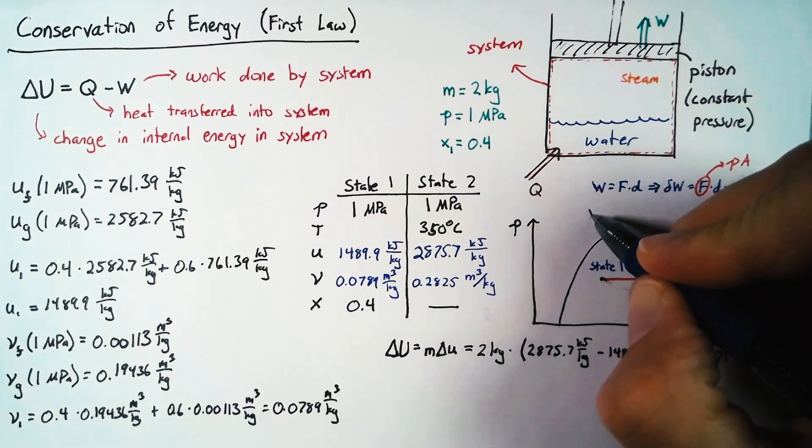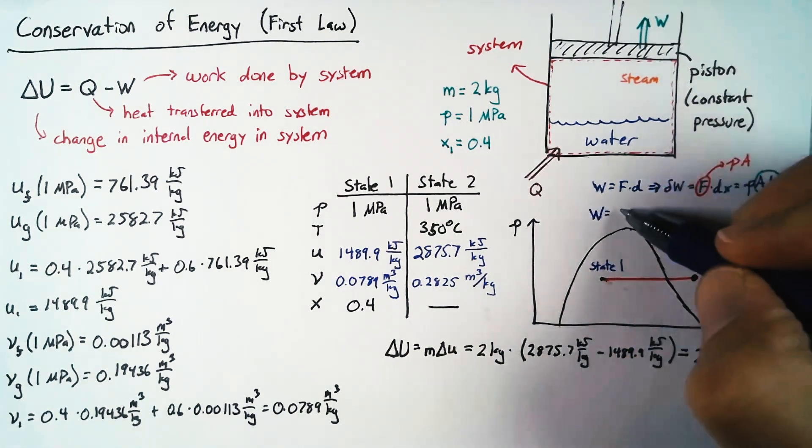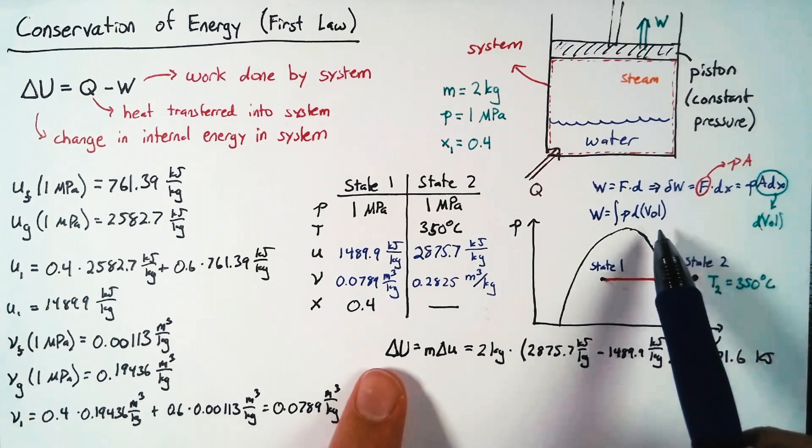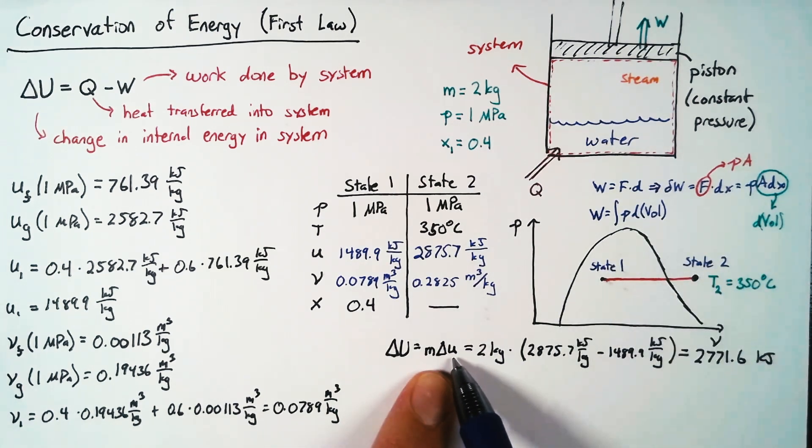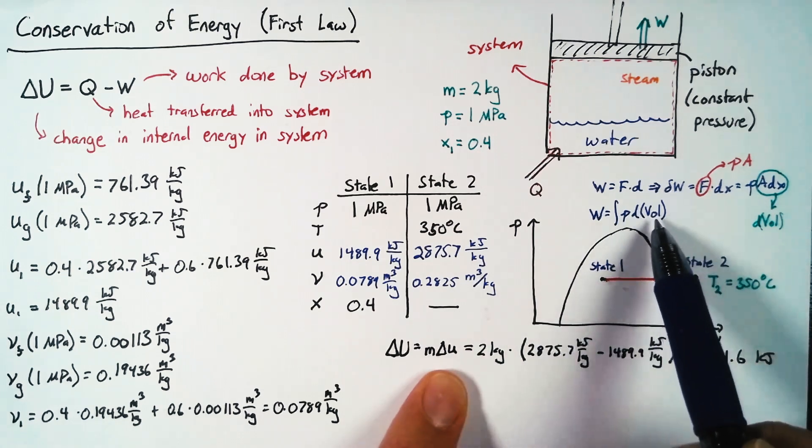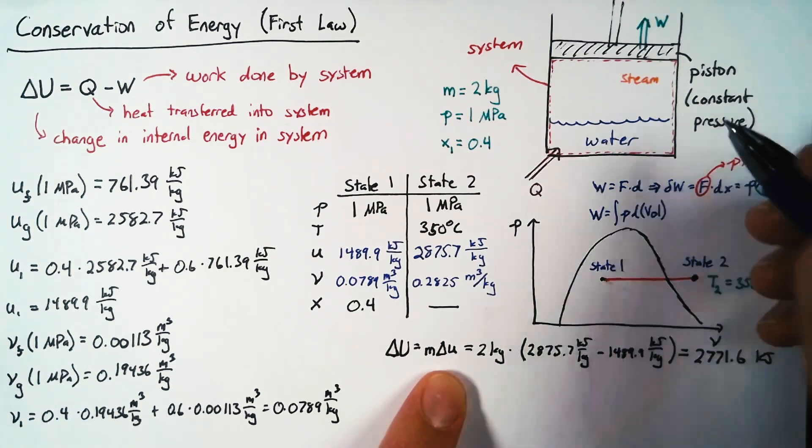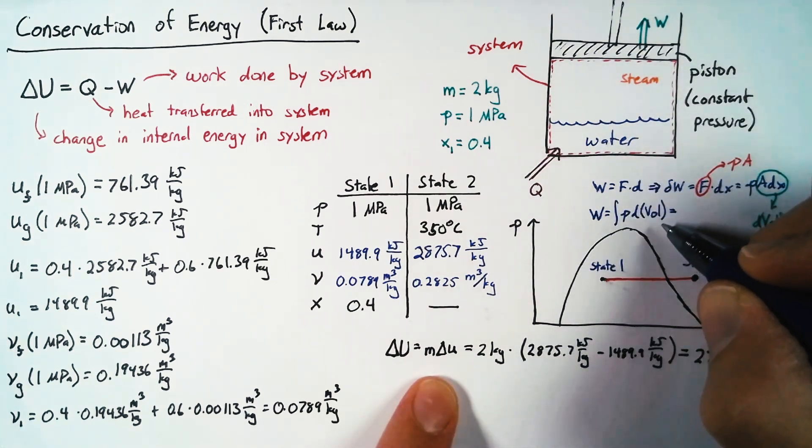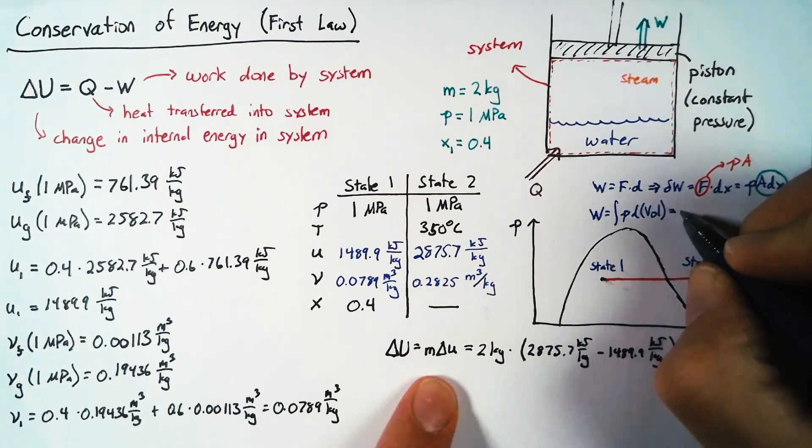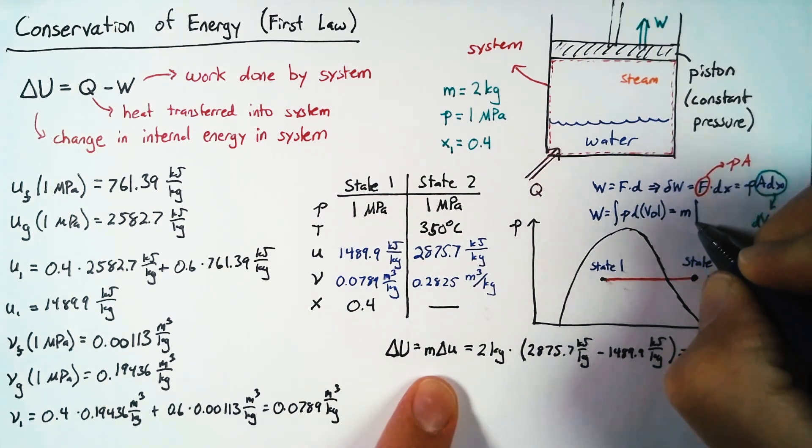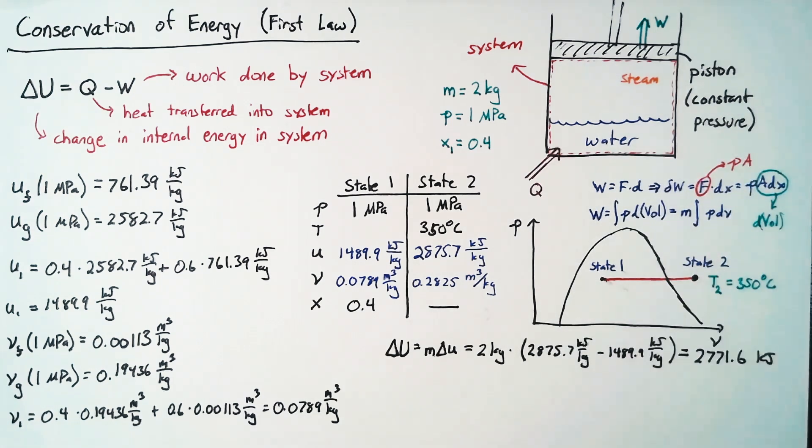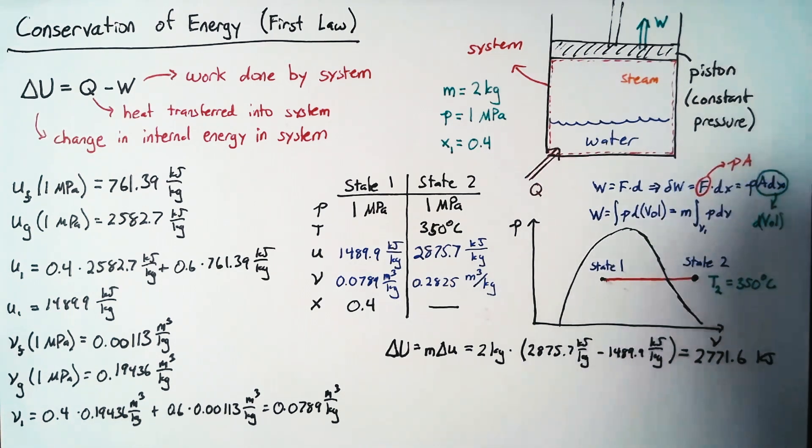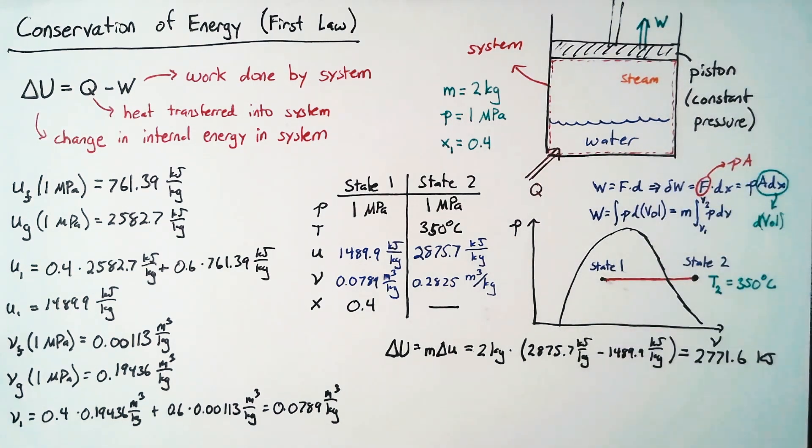And so if we want to find the amounts of work, we can actually say that this is the integral of pressure with respect to the volume. But just like before, it's easier for us to work with the mass-specific values than it is to work with our extensive properties. And so we're going to bring out a mass from this. We're going to recognize that our volume is equal to mass times the specific volume. So this ends up being a mass multiplied by the integral of p dv. And now we can actually give limits to this. So this is going to be integrating from v1 to v2.